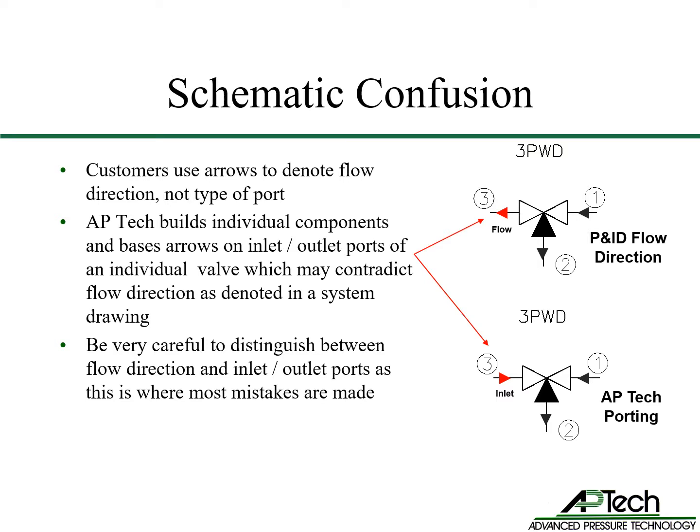A customer's piping system diagram may use arrows or triangles to indicate flow direction, not the type of valve port. Be very careful to distinguish between P&ID flow direction and APTEC inlet and outlet ports, as this is where most mistakes are made. In the top diagram, a customer's P&ID indicates flow direction with arrows — gas flows through the valve under the seat from left to right and exits port number three. However, in the bottom diagram, APTEC porting under the seat is always an inlet even if the flow direction of port number three is in fact reversed.